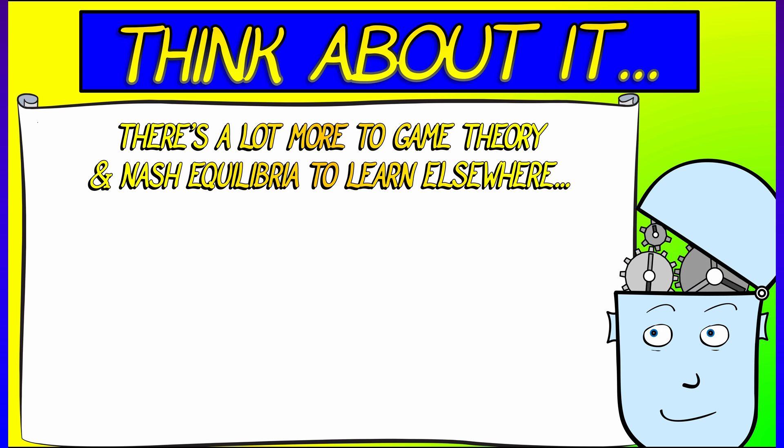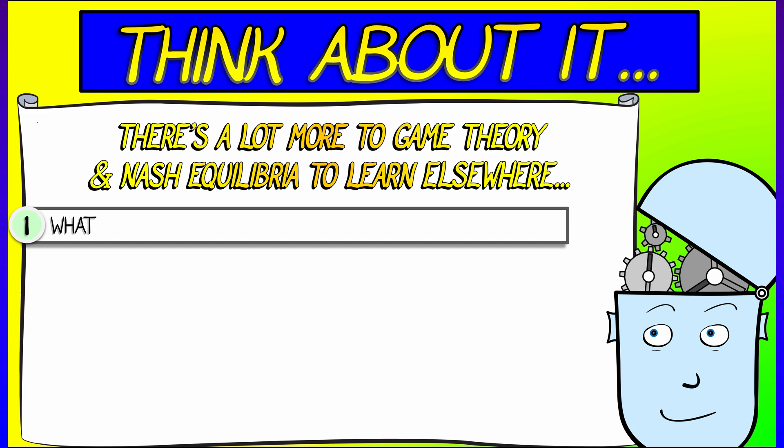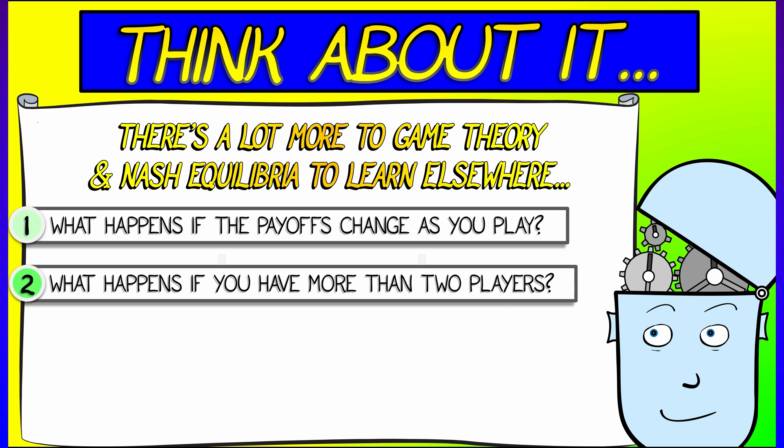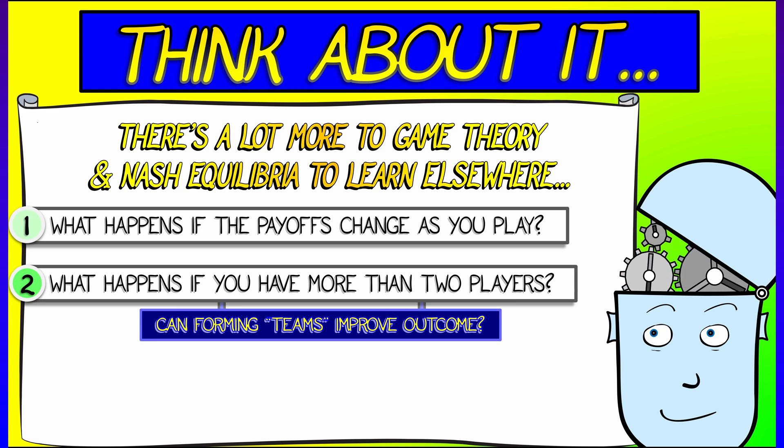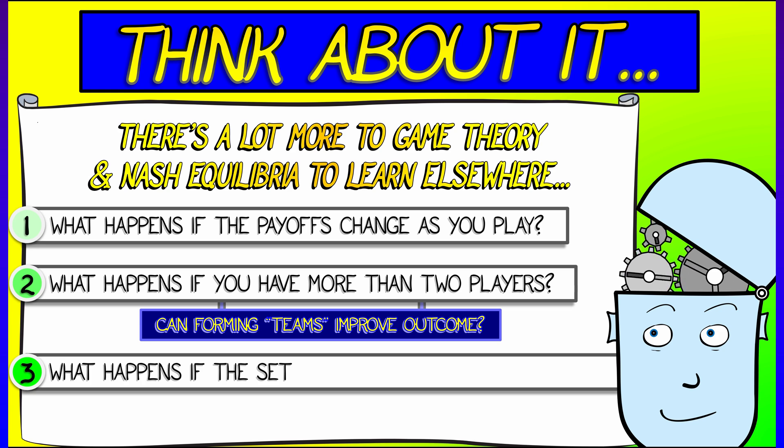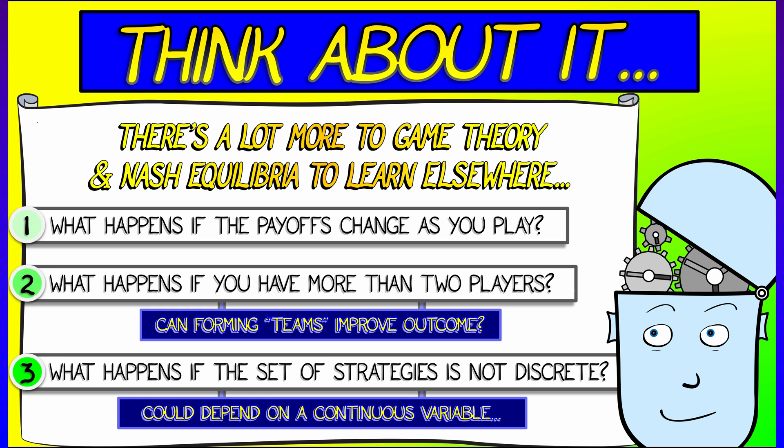But game theory is so cool. There is so much to see and learn in other contexts. You might wonder, what happens if the payoffs change as you play? You look at dynamic games. What happens if you have more than two players? What happens if you try to improve teams? Can that improve the net outcomes? What does that have to tell us about genetics and evolution? So many good questions. What happens if the set of strategies is not discrete but continuous? I wonder if integrals might show up here somewhere. So many interesting questions.